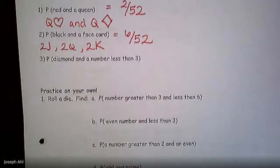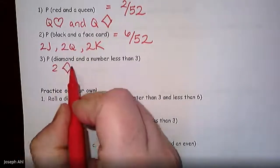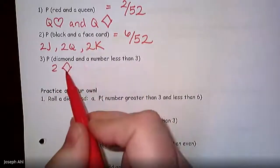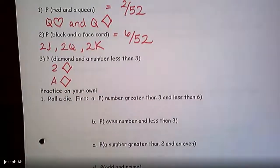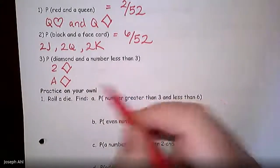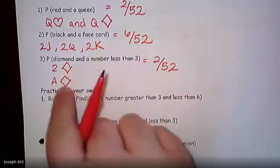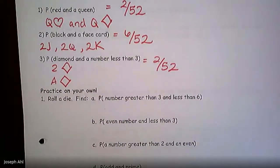For the probability that it's a diamond AND a number less than 3: the two of diamonds meets the criteria since 2 is less than 3 and it's a diamond. You can also include the ace of diamonds — if the ace counts as a 1, it would also be less than 3. Based on where it's listed in our deck of cards chart, we can count it. So there are 2 cards out of 52 that are both a diamond and less than 3.